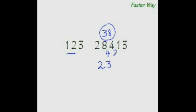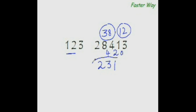This becomes 21, so our new dividend would be 21 minus 3 times 3, which is 9, so 21 minus 9 is 12. 12 goes into 12 exactly once, so I write 1 here and the remainder is 0. Our new dividend would be 3 minus 3 times 1, which is 3, so 3 minus 3 is 0 — and you know that 231 is your answer.